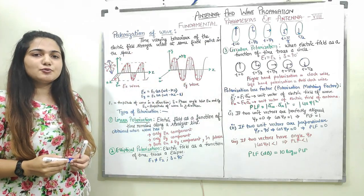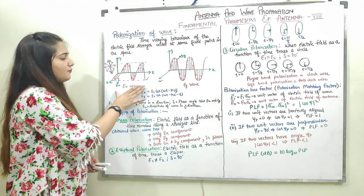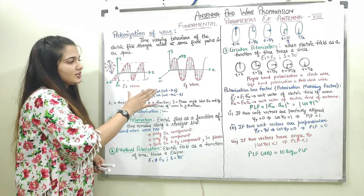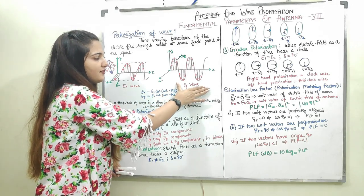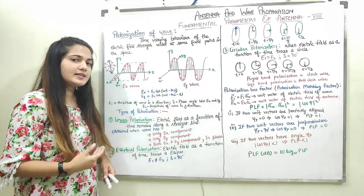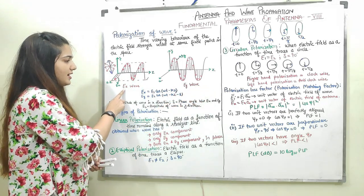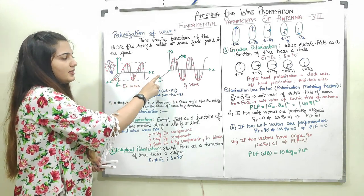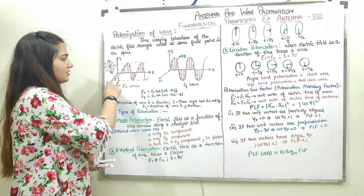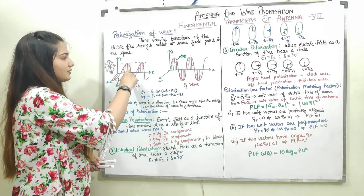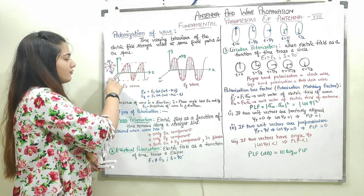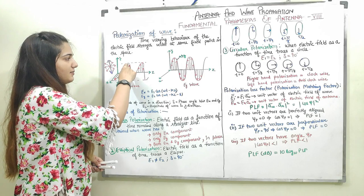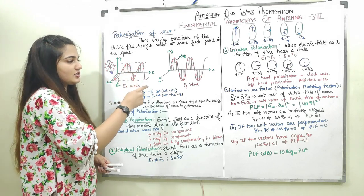I have taken two cases: the polarization of the wave in the x direction and the polarization of the wave in the y direction, considering the electric field components Ex and Ey. This wave is moving in the z direction. The x component has its maxima and minima in the x direction.